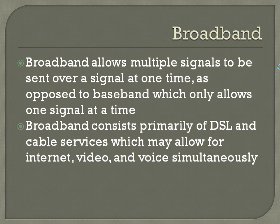Broadband consists primarily of DSL and cable services, which may allow for Internet, video, and voice simultaneously. With DSL, you've got different sets of frequencies that correspond to each of the services — regular telephone service uses those lower frequency bands, and the higher frequency bands are taken over by your DSL connection. Cable services are starting to do the same thing, offering Internet, video, and voice using different frequencies.